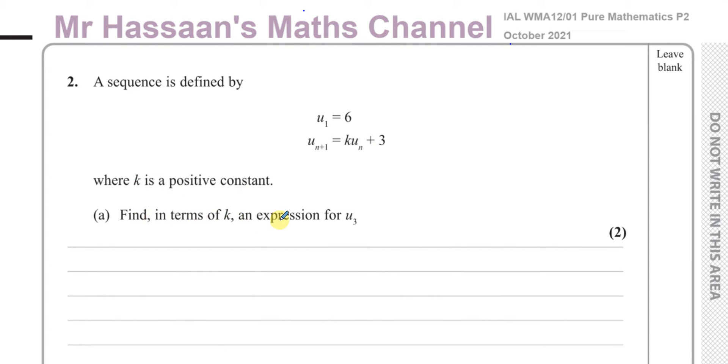Find in terms of K an expression for U3. So what does this mean? It's a bit alien to some people when they first look at something like this, but it's actually quite simple. This formula tells you how to get to the next term from the term previous to it.